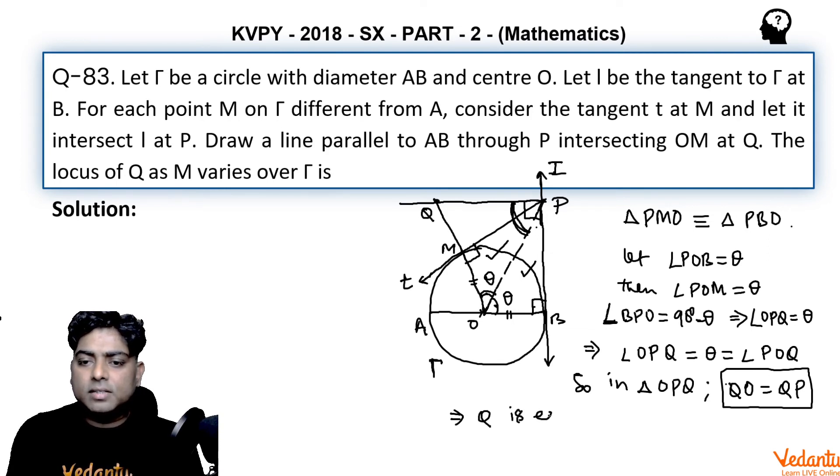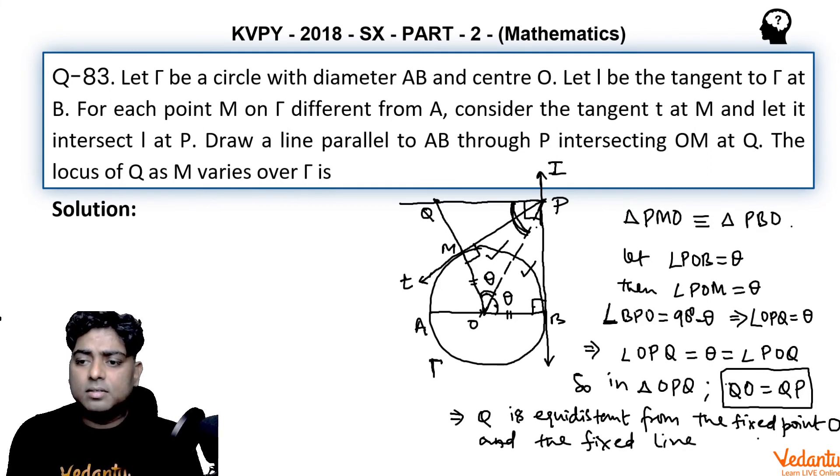So QO equals QP can be considered as: point Q is equidistant from the fixed point O and the fixed line I. The tangent at B is a fixed line.